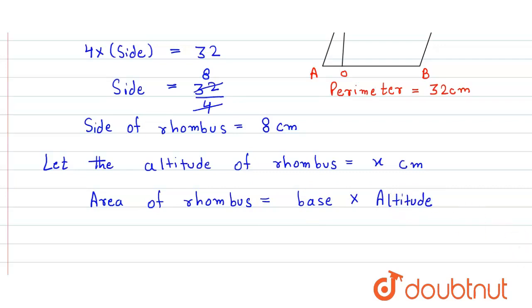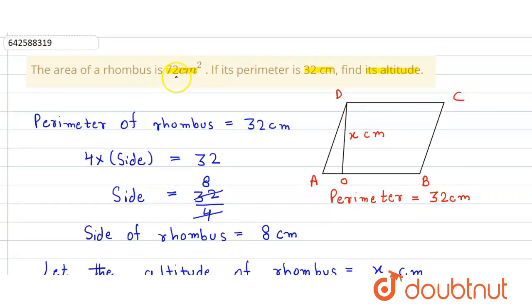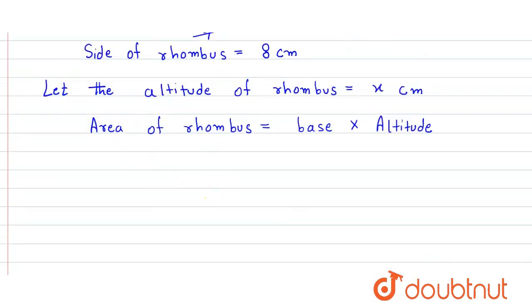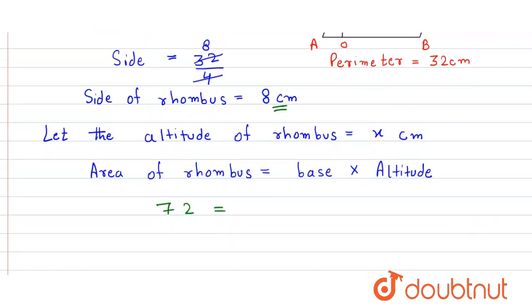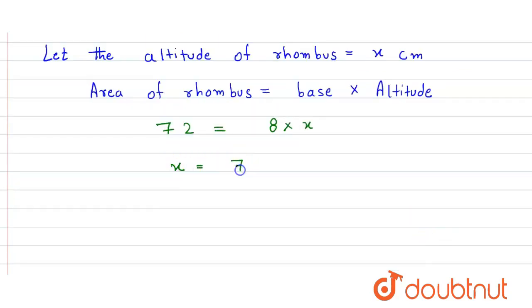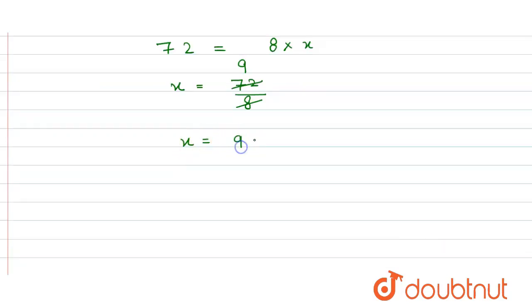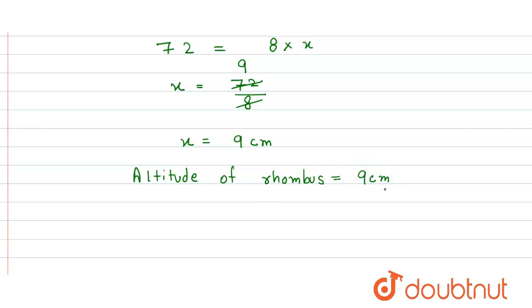Substituting the values: the area is 72 centimeter square, the base equals the side of the rhombus which is 8 centimeter, so 72 = 8 × x. Therefore x = 72 ÷ 8 = 9. So the altitude of the rhombus is 9 centimeter, and that is our answer.